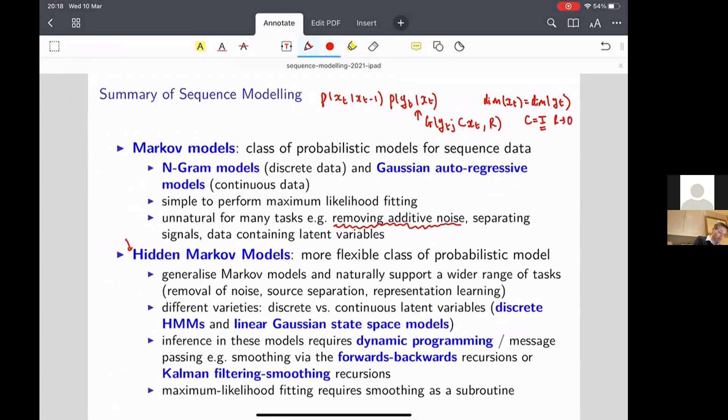And in that case, this Gaussian here will become a delta function. So the rule for generating Y_T is it's a delta function centered on X_T. So you always get copies of X_T back.